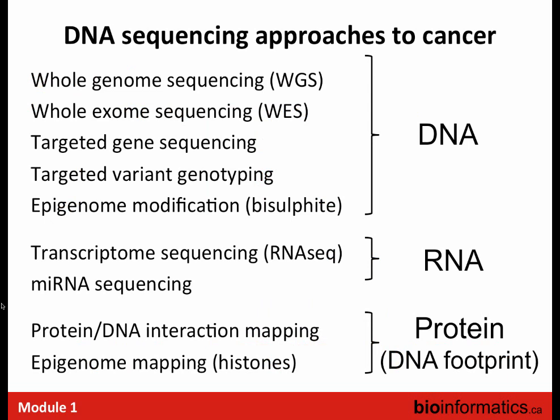Here's a list of DNA sequencing approaches to cancer specifically: whole genome and exome sequencing, targeted gene sequencing, variant genotyping, and epigenome. I've grouped these conceptually into DNA sequencing, modifications to the DNA sequence, RNA sequencing — both microRNA and whole transcriptome — and finally a readout of protein modifications in the form of mapping protein-DNA interactions such as RIP-seq, CLIP-seq, and epigenetic mapping like ATAC-seq for looking at open versus closed chromatin regions. There's a whole workshop specifically on epigenetic analysis, but primarily this workshop is going to focus more on the DNA and RNA work.